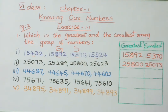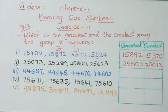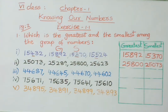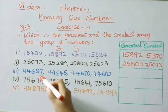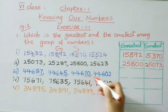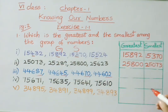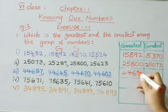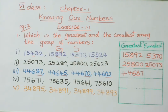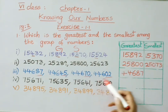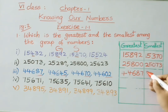See the third sum: 44,687, 44,645, 44,670, and 44,602. The first three digits are the same in all four numbers, so let us see the last two digits: 87, 45, 70, and 02. The greatest is 87, so 44,687 is the greatest number. Among the remaining — 45, 70, and 02 — the smallest is 02, therefore the smallest number is 44,602.